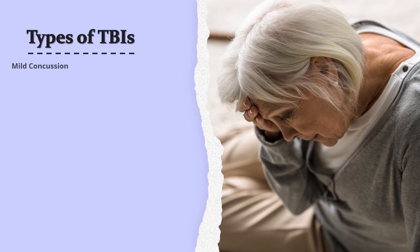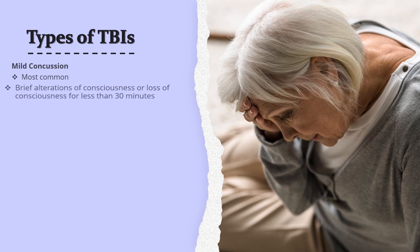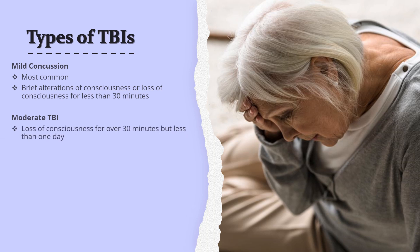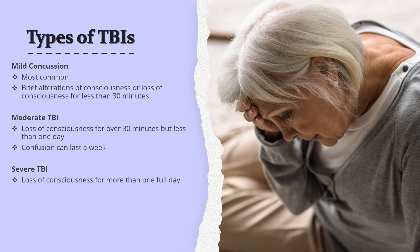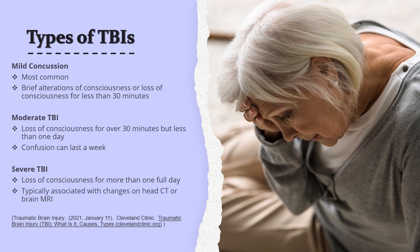A mild concussion is the most common type of TBI, and includes brief alterations of consciousness or loss of consciousness for less than 30 minutes. A moderate TBI includes loss of consciousness for over 30 minutes but less than one day, though confusion can last a week. A severe TBI includes loss of consciousness for more than one full day, and is typically associated with changes on a head CT or brain MRI.